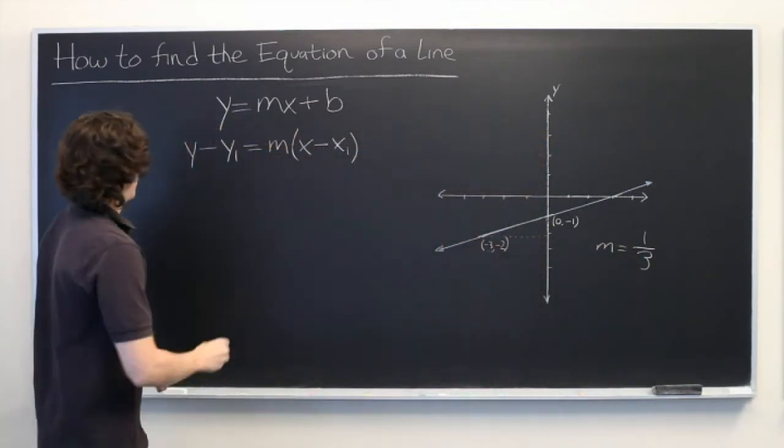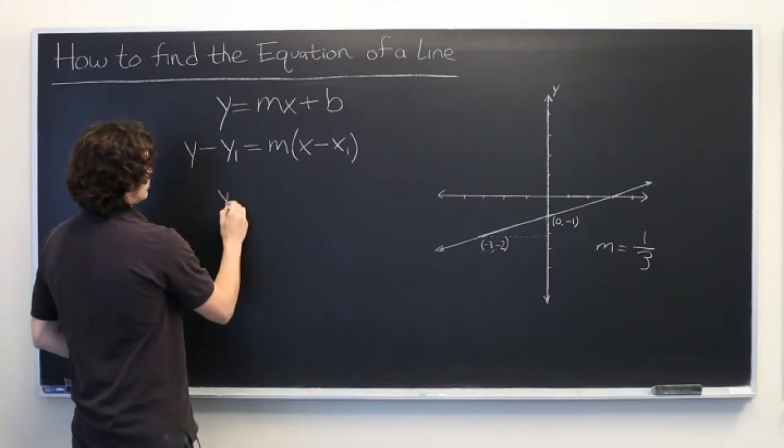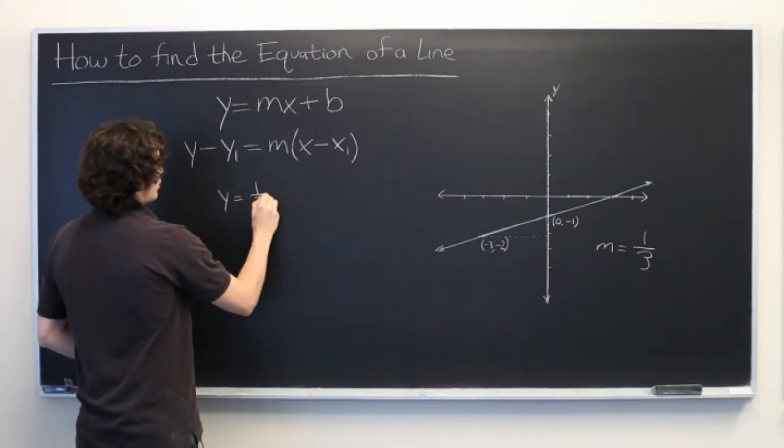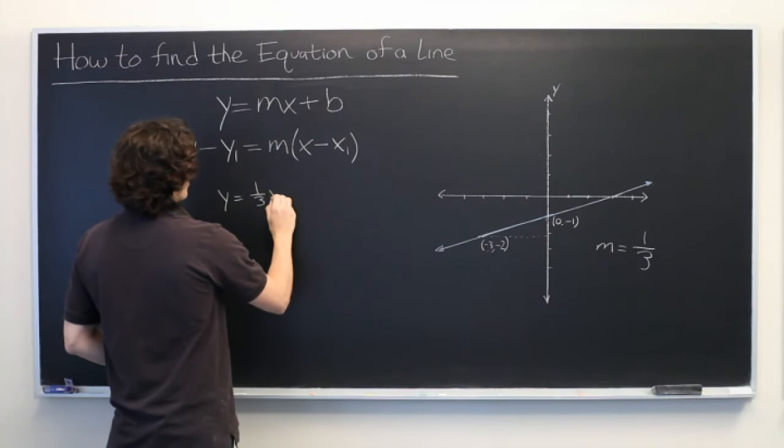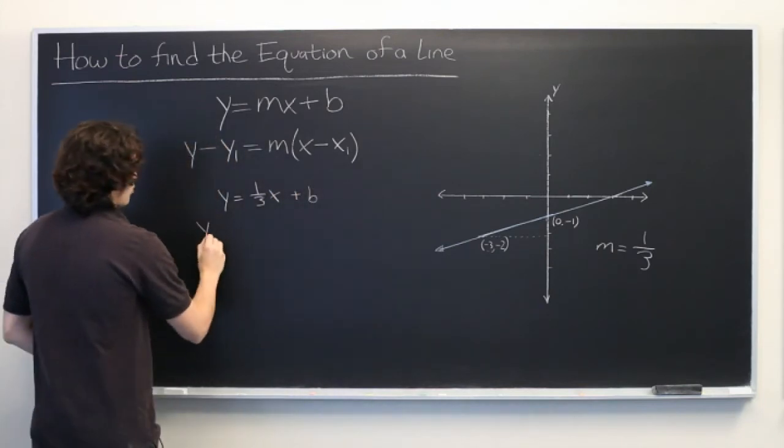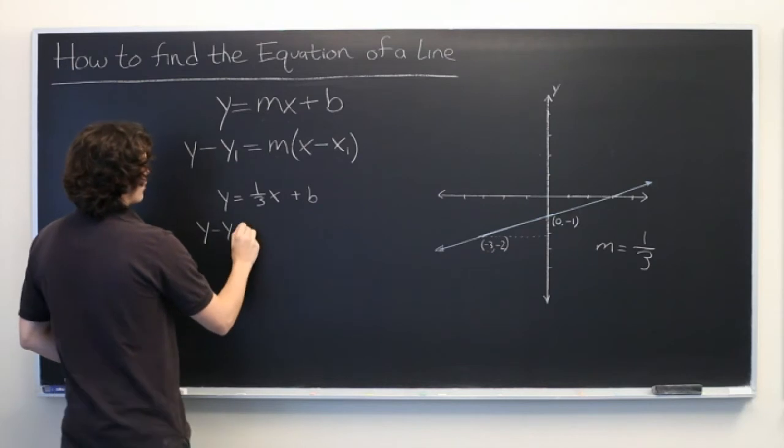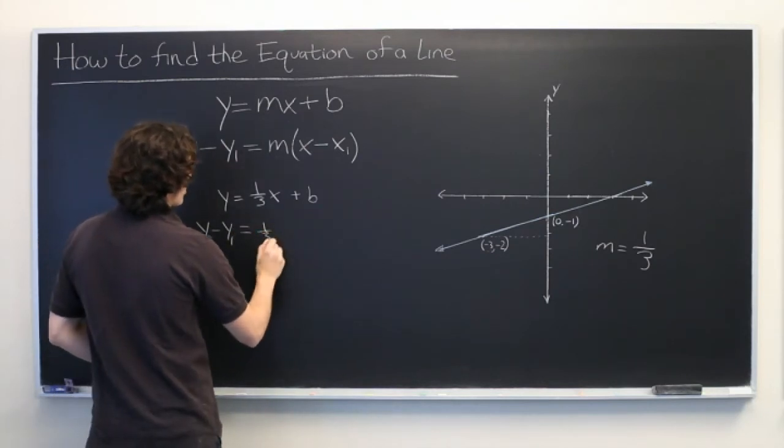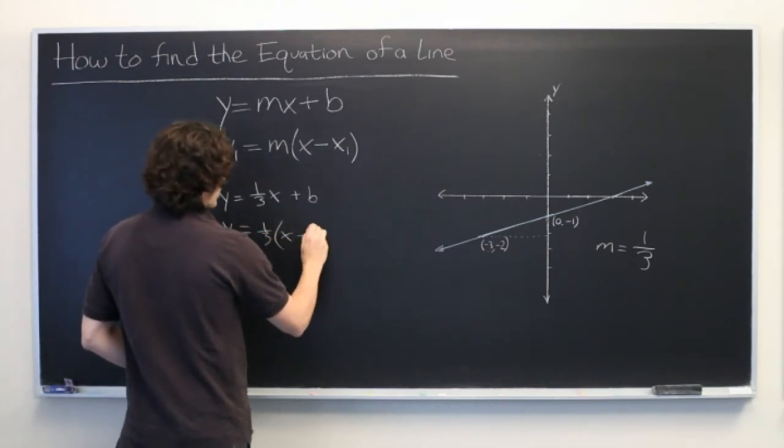Let's start filling in the information that we know. y equals one-third x plus b, and y minus y1 equals one-third times (x minus x1).